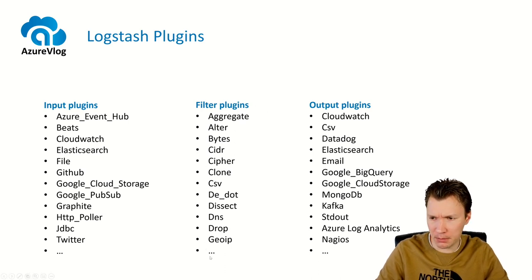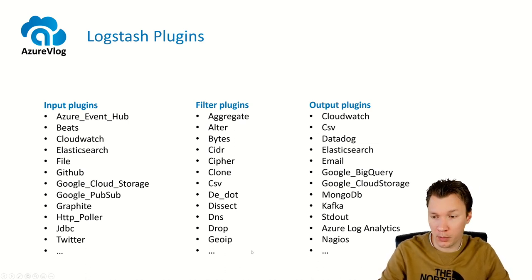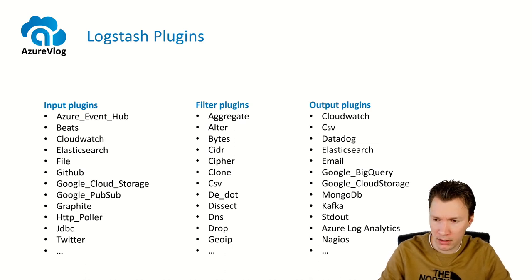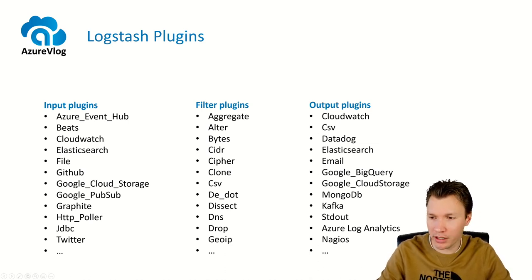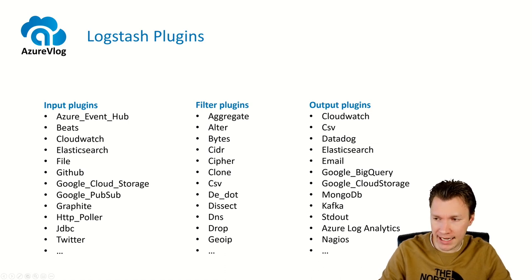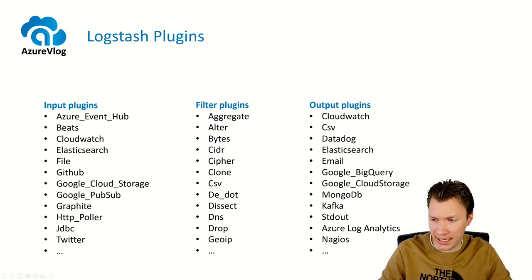We also have filter plugins available. One that I think is really interesting is the GeoIP plugin, which is able to enrich an IP address with geographical information. There is also a CIDR plugin available, which is helpful when dealing with and processing IP addresses. A De-dot plugin is helpful when you have to remove a lot of dots in your data. For output plugins, we have CloudWatch, output to a CSV file, output to the Elasticsearch database, and output to email.